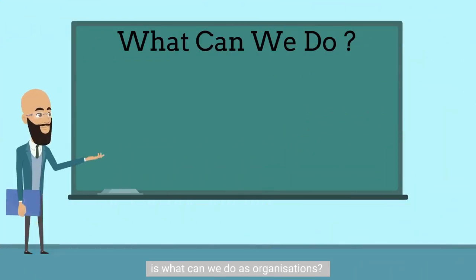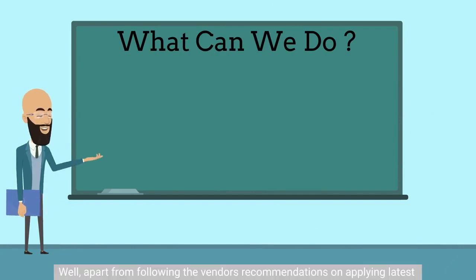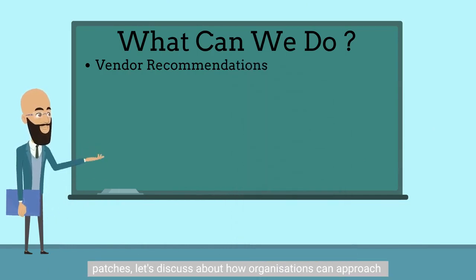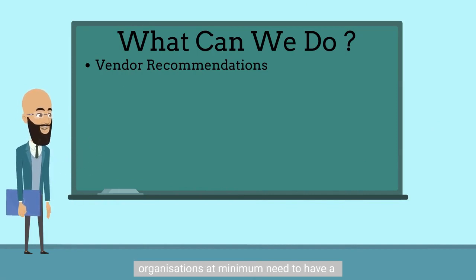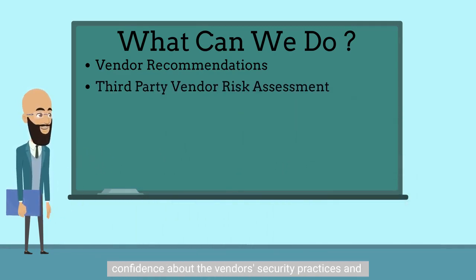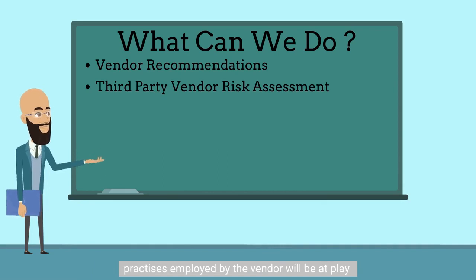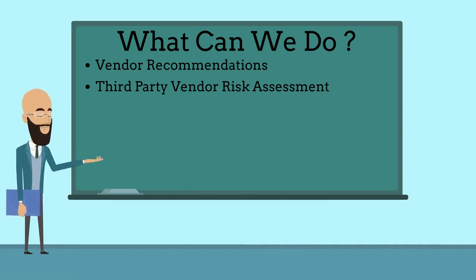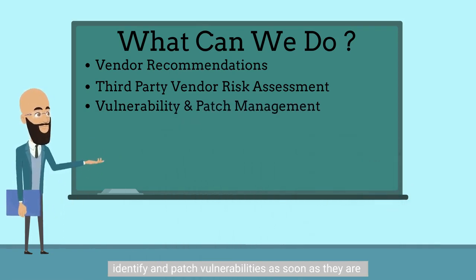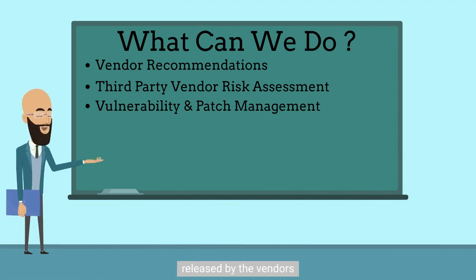So now the question is, what can we do as organizations? Well, apart from following the vendors' recommendations on applying the latest patches, let's discuss how organizations can approach such attacks holistically. At minimum, organizations need to have a third-party vendor risk assessment process that will give confidence about the vendor's security practices and processes. In this case, secure software development practices employed by the vendor will be at play. A good vulnerability and patch management process that will identify and patch vulnerabilities as soon as they are released by the vendors is also essential.